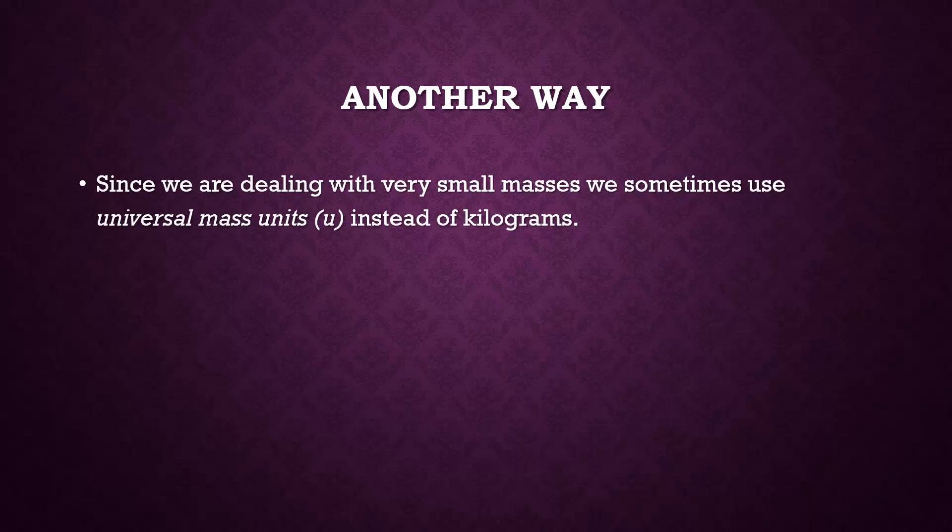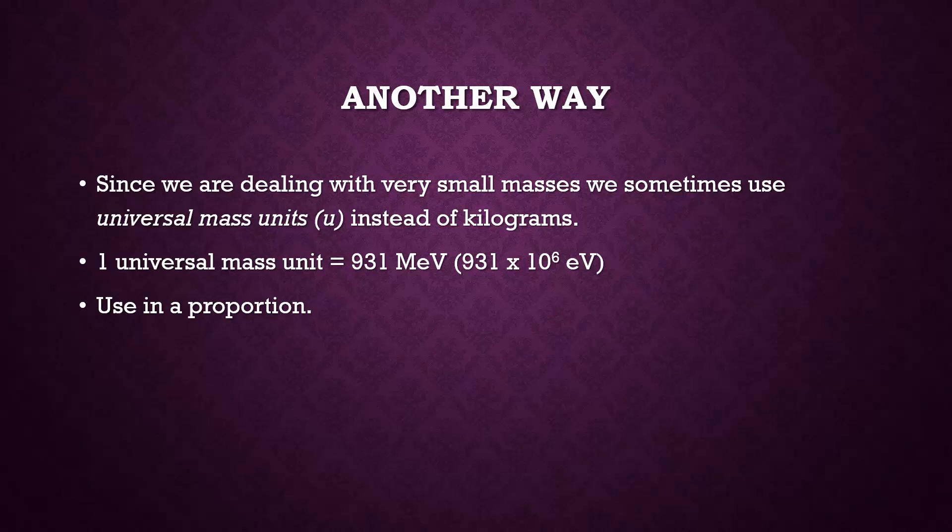Since we're often dealing with very small masses, we sometimes use universal mass units instead of kilograms. One universal mass unit is equivalent to 931 mega electron volts. You can use this equality in a proportion. Let's take a look at an example.